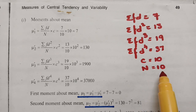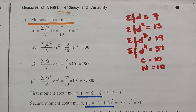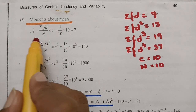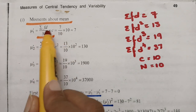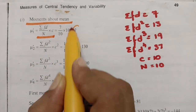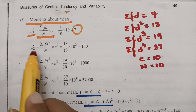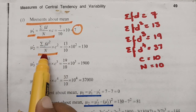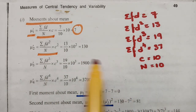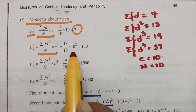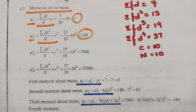Now we calculate the raw moments. The first raw moment: μ₁' = (Σfd / n) × c = (7/10) × 10 = 7. The second raw moment: μ₂' = (Σfd² / n) × c² = (13/10) × 100 = 130.